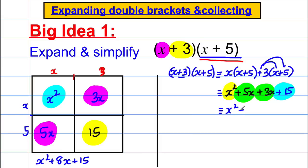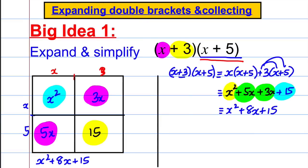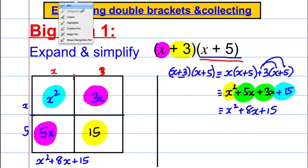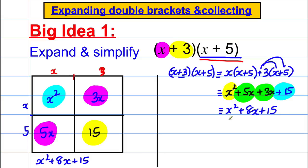Both methods are acceptable in the exam. However, I would suggest that if you're going for really high scores and looking to do A-level, the algebraic method is better because it's going to help us when we do factorising. I would rather you use that method if at all possible — though the box method is fine too.